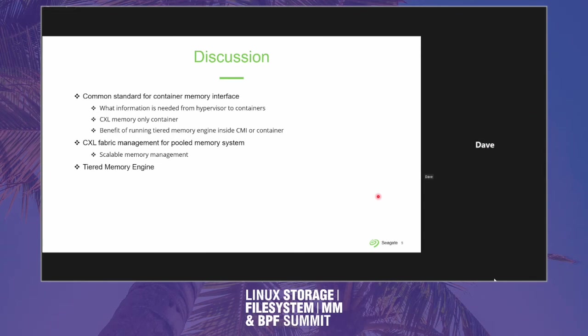There is quite a bit of standards work in this area. ACPI has a long-standing way of enumerating latency between different NUMA nodes. There's also something newer in ACPI called the HMAT — the Heterogeneous Memory Attribute Table — which gives individual read and write latency and bandwidth for every individual proximity domain, which is roughly a NUMA node in Linux. For CXL, there's also the CDAT table — the Coherent Device Attribute Table — which provides basically the same information as HMAT but for CXL-attached memory.